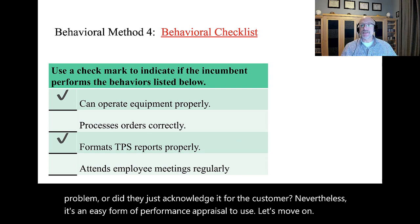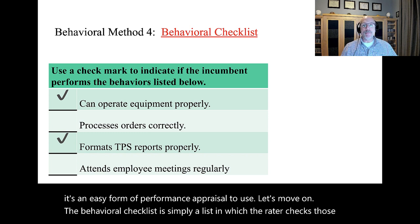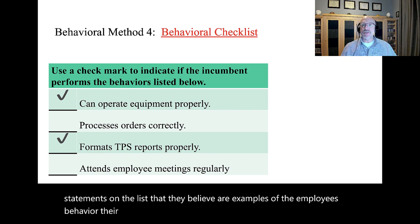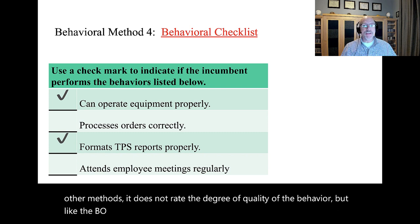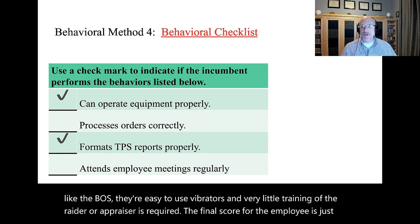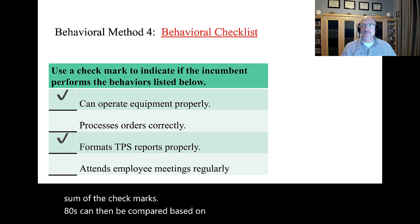The behavioral checklist is simply a list in which the rater checks those statements that they believe are examples of the employee's behavior — it is basically a yes-no checklist. Like the BOS, they're easy to use by raters and very little training of the rater or appraiser is required. The final score for the employee is just the sum of the check marks, and employees can then be compared based on their sum scores.